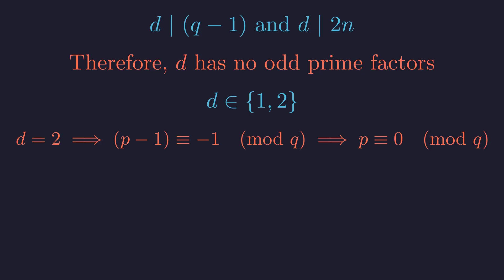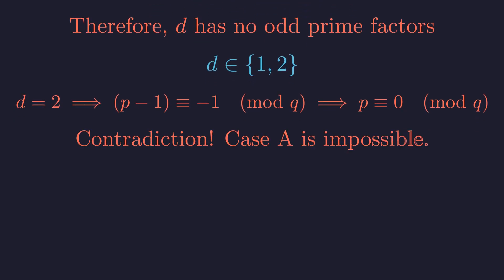q is a prime factor of n, so if q also divides p, then n and p cannot be coprime, which violates the premise of case A. This contradiction shows that case A is impossible. There are no solutions where v_p(n) equals 0.